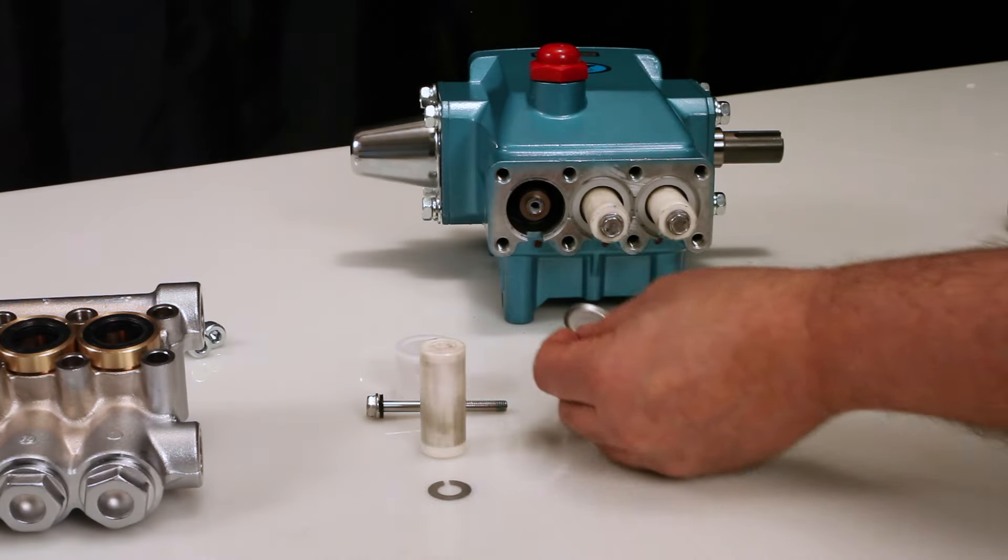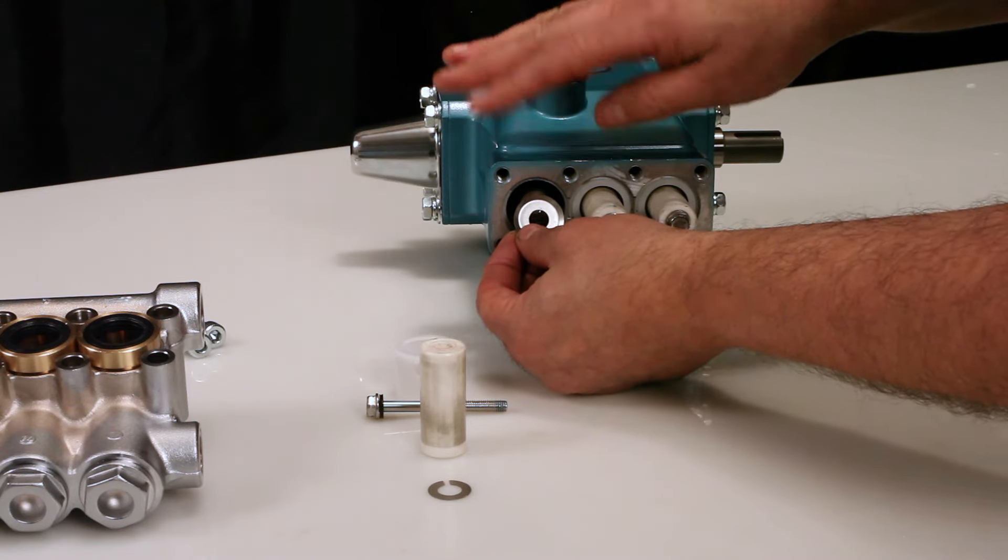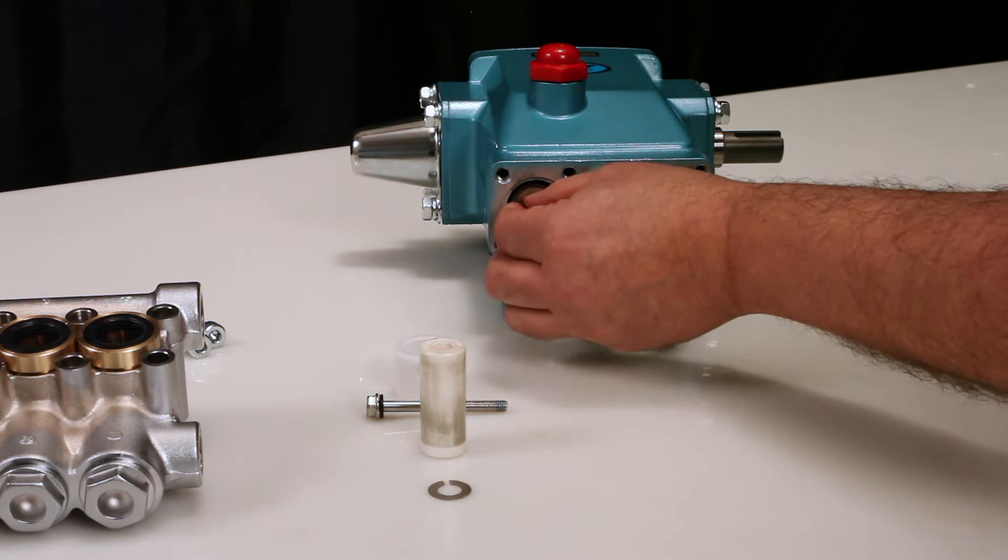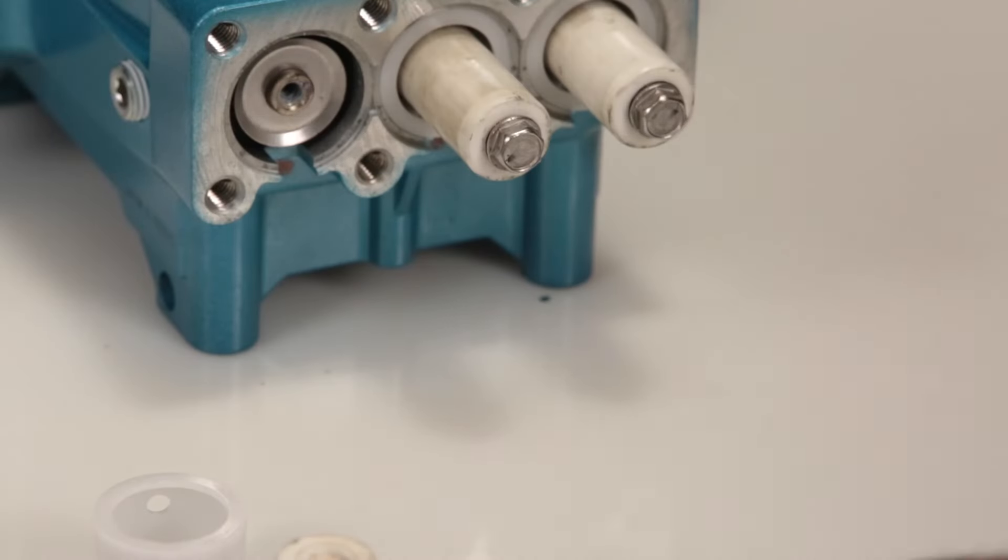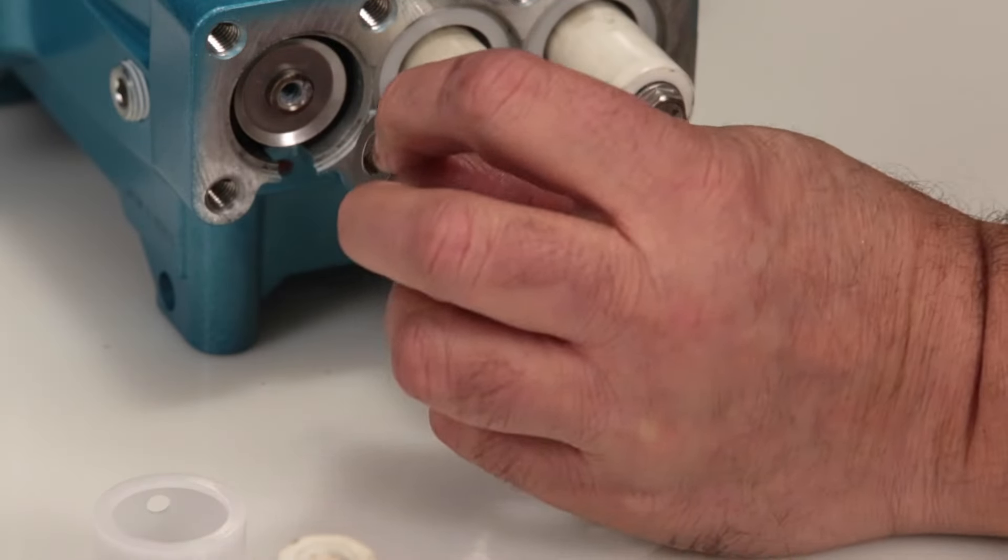To reassemble, install the barrier slinger with the dish side facing away from the crankcase. Next, install the keyhole washer. The slot can face in any direction.